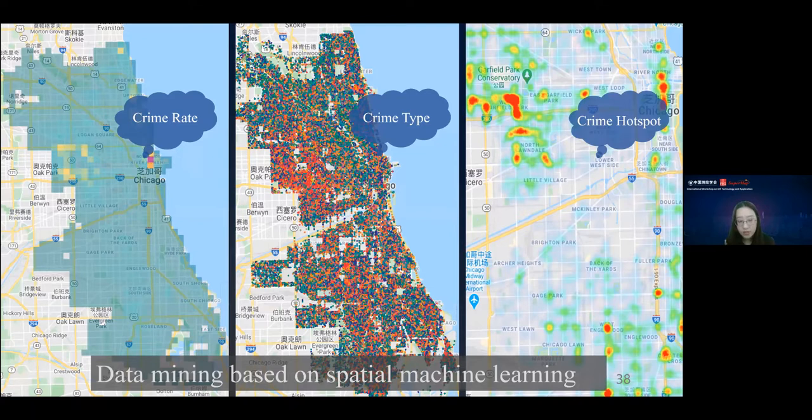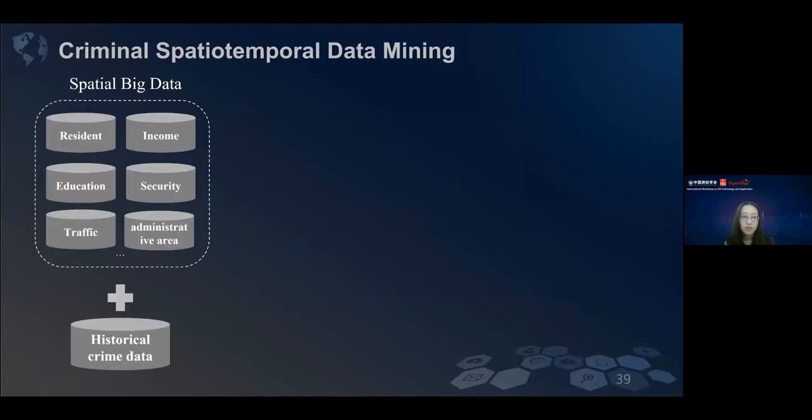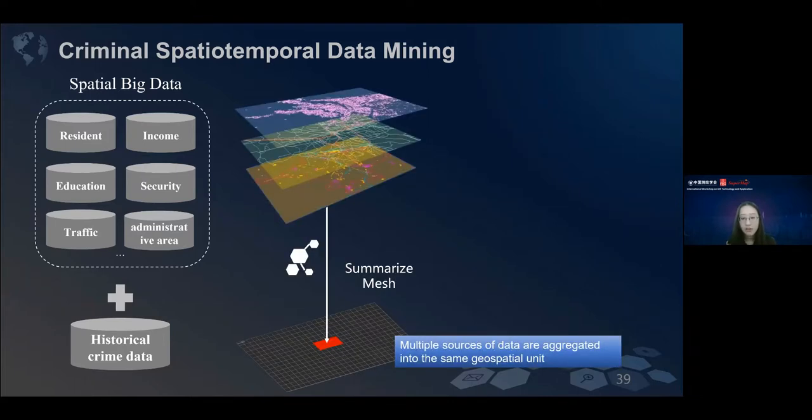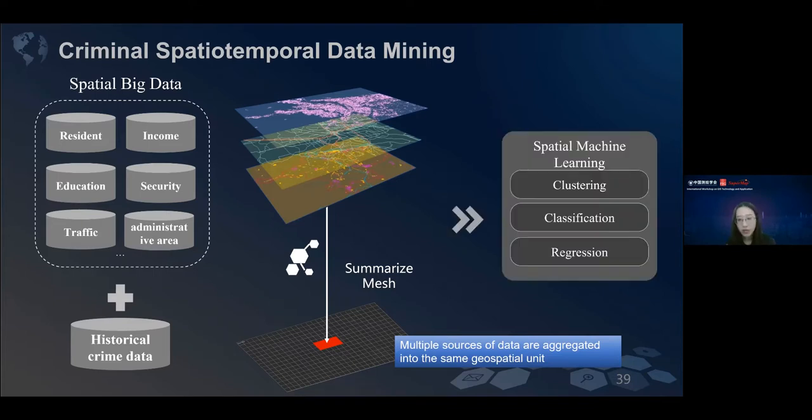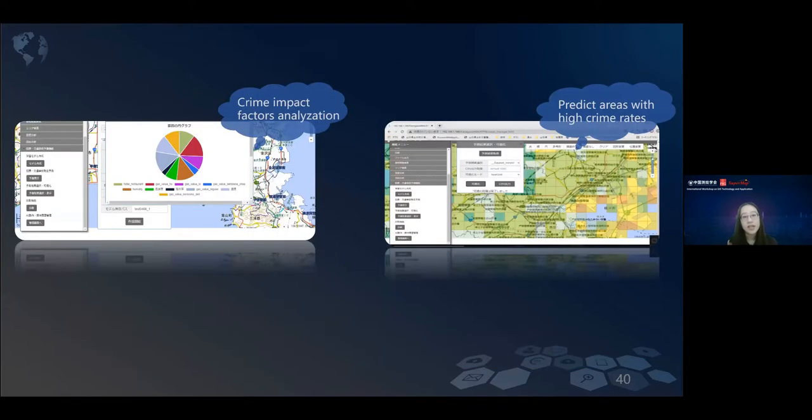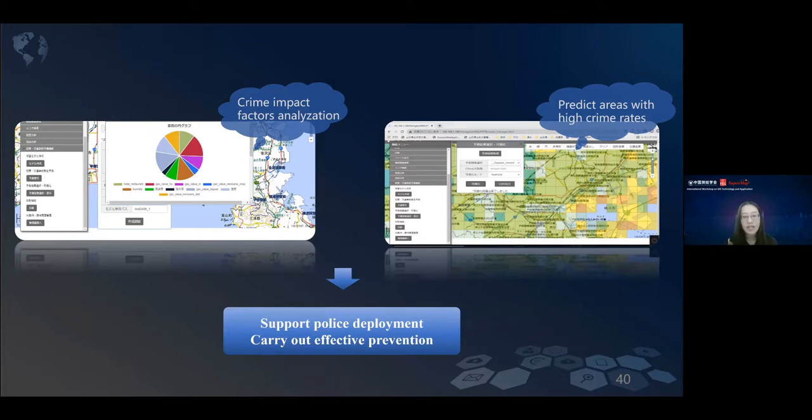How can we get this result? First is collect data. We all know that crime rate has a strong correlation with residents' income, their education levels, and some traffic levels. We collect this data with historical crime data. After that, we summarize this data into the same geospatial unit or geospatial grid, and we use some spatial machine learning algorithms on each geospatial unit to get some statistic results. With the same idea, we can develop some crime GIS systems to help us analyze the crime impact factors and predict areas with high crime rates. This can support police deployment and carry out effective preventions.